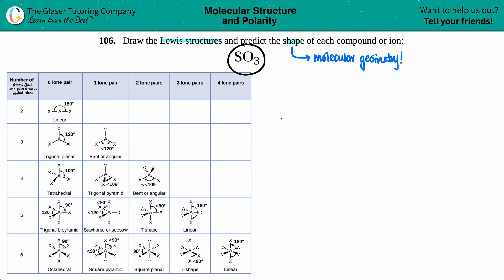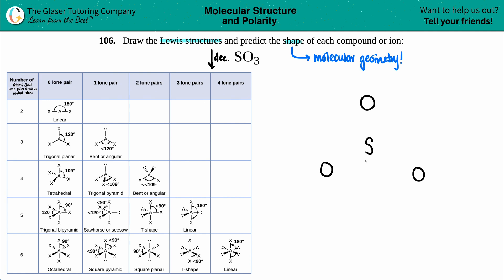For sulfur trioxide, always pick the least electronegative element as the central atom. Between sulfur and oxygen, they're in the same group, but as you go down a group electronegativity decreases. So sulfur is a little less electronegative than oxygen — sulfur goes in the middle, surrounded by three oxygens.